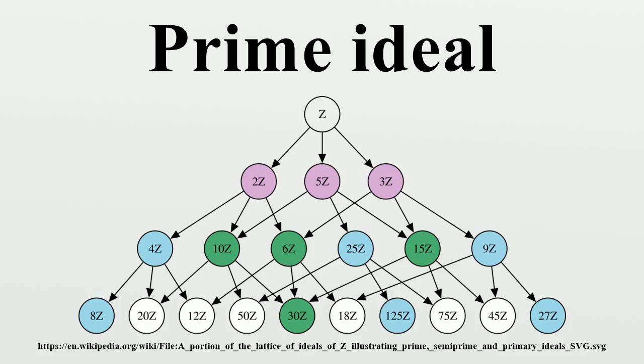A non-empty subset S⊆R is called an M-system if for any A and B in S, there exists R in R such that ARB is in S. The following item can then be added to the list of equivalent conditions above. The complement R\P is an M-system.